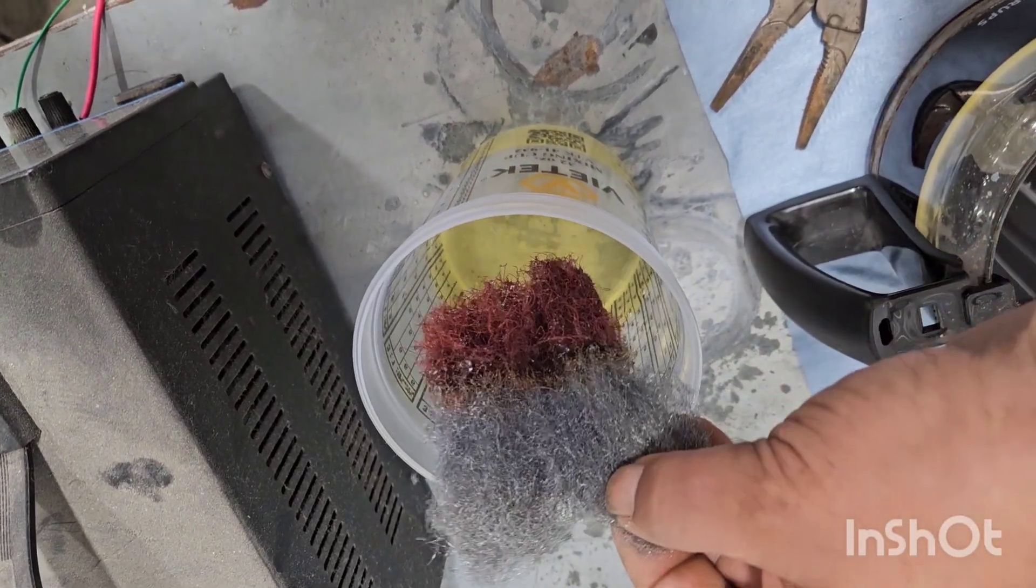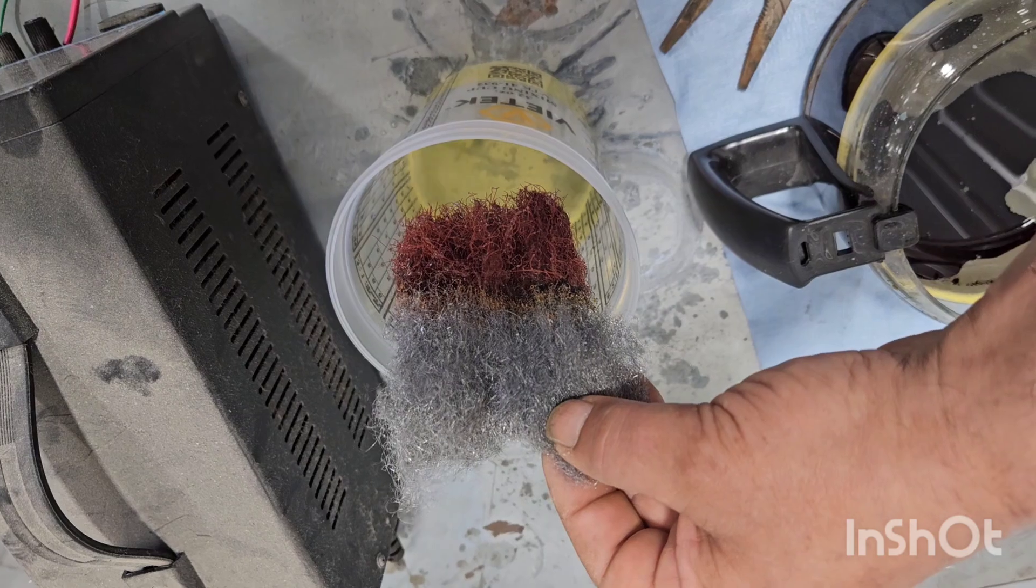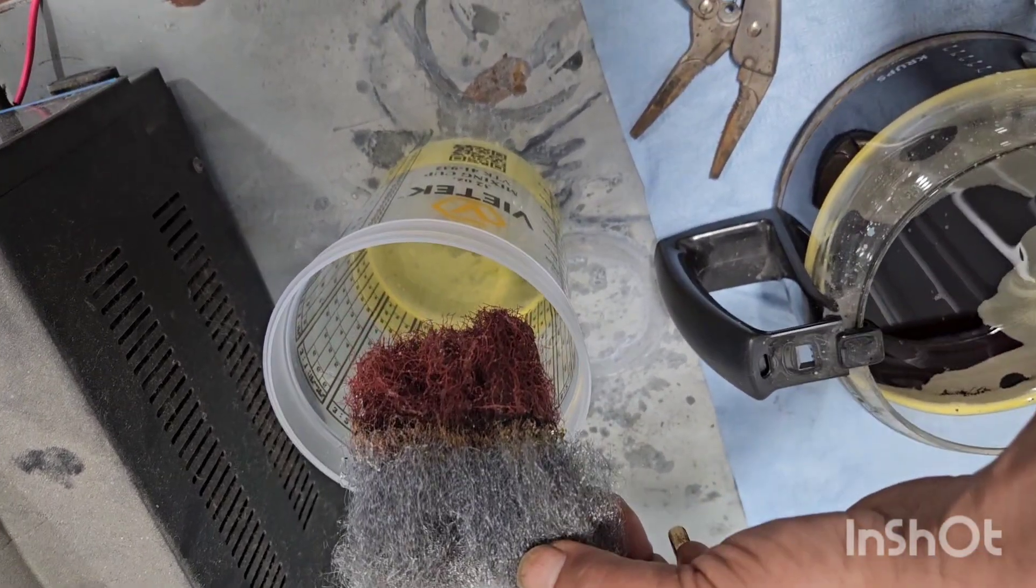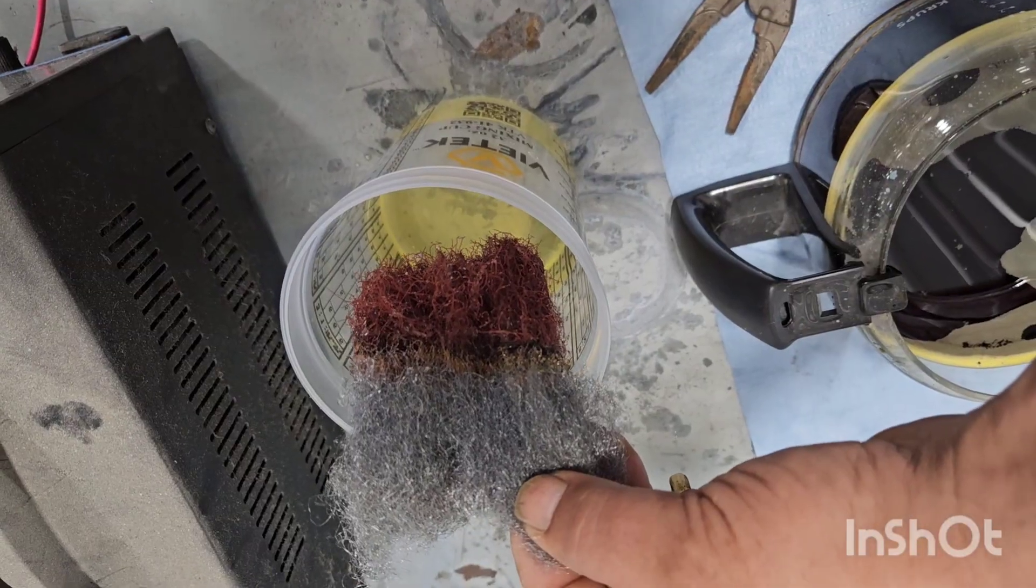And then what I'll do is I will take and cut the lower half of this with the gold bearing material on it off of the clean steel wool.